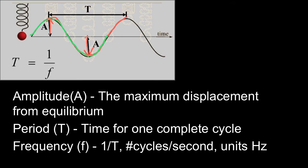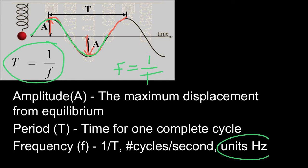The frequency is how quickly we're going through the period. The period is 1 over the frequency, which also means the frequency is 1 over the period. Frequency is measured in Hertz.